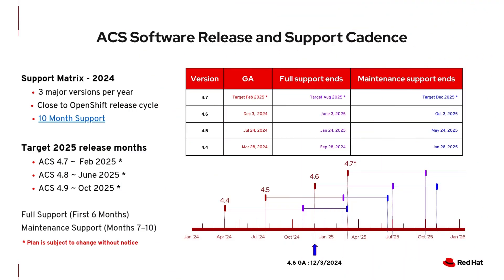With the new release comes a new support cadence. With ACS, full support begins at the GA release of the minor version and ends after a six-month period, in which case maintenance support kicks in. Right now, it's available for ACS 4.4 releases and newer, and then after 10 months it will fall into no support. We expect ACS customers to try to keep their environments up to the most current supported micro version. I'll leave some notes in the description below if you want to take a full look at the support cadence as well as the OpenShift operator life cycles.